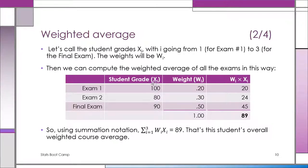Notice, if you use the symbols, it's the sum of Wi times Xi. Wi represents the weights, and notice the average again is 89. You'll see it's not the same as a simple average.